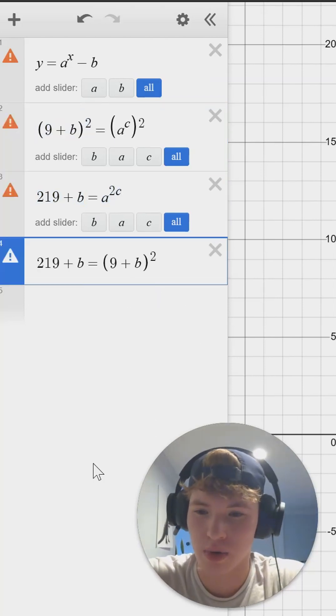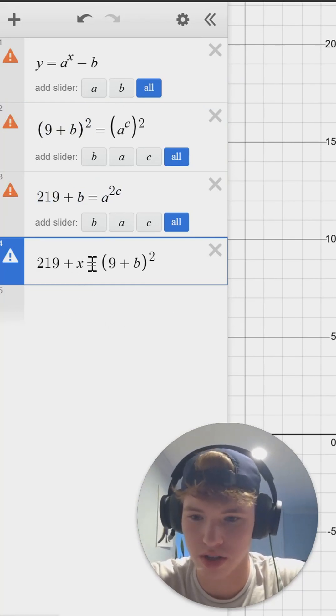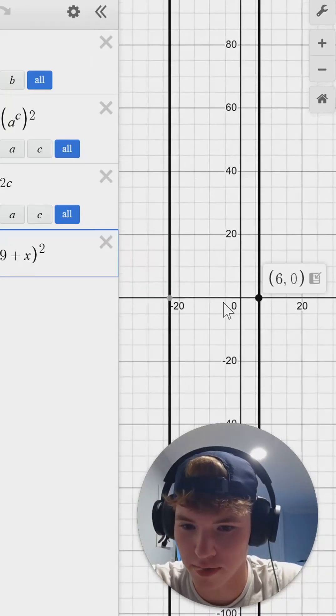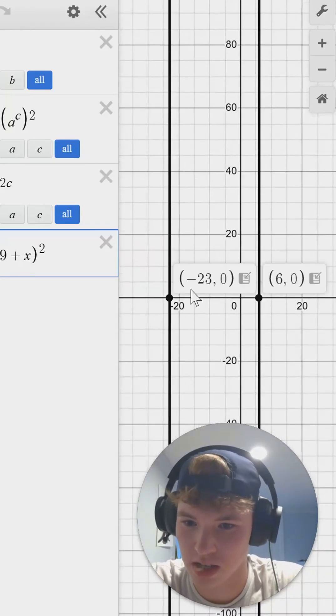And now since Desmos is super picky about what variables you use, let's just switch these to X real quick so we can get an answer. And we can go over here on the graph and see we have the points of 6 and negative 23.